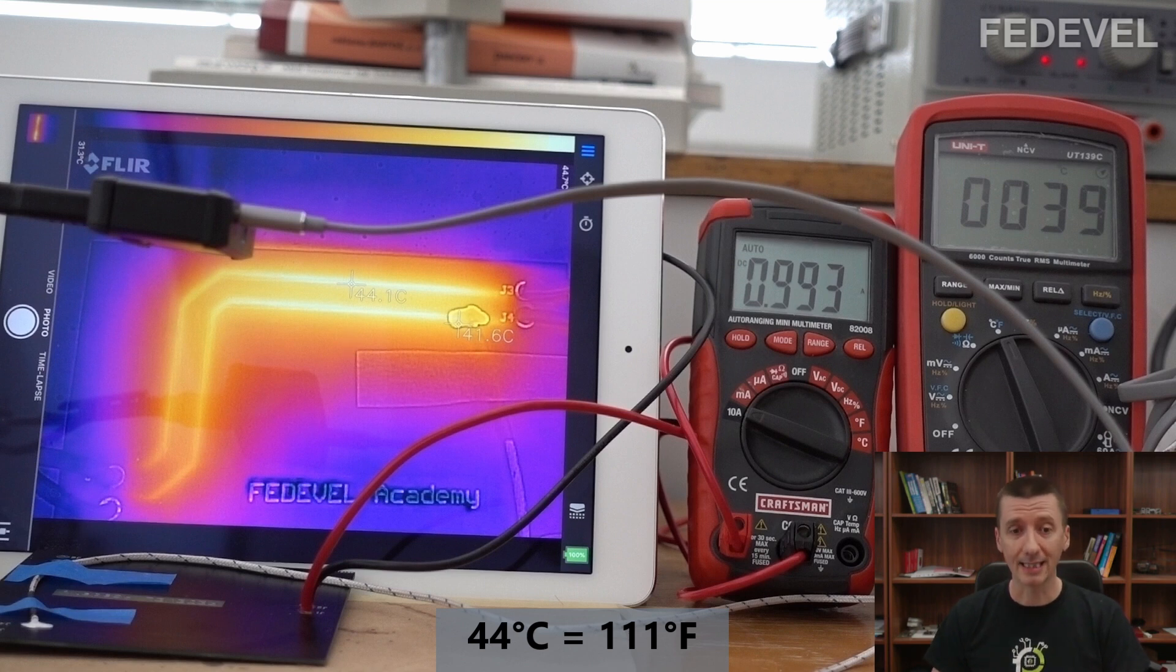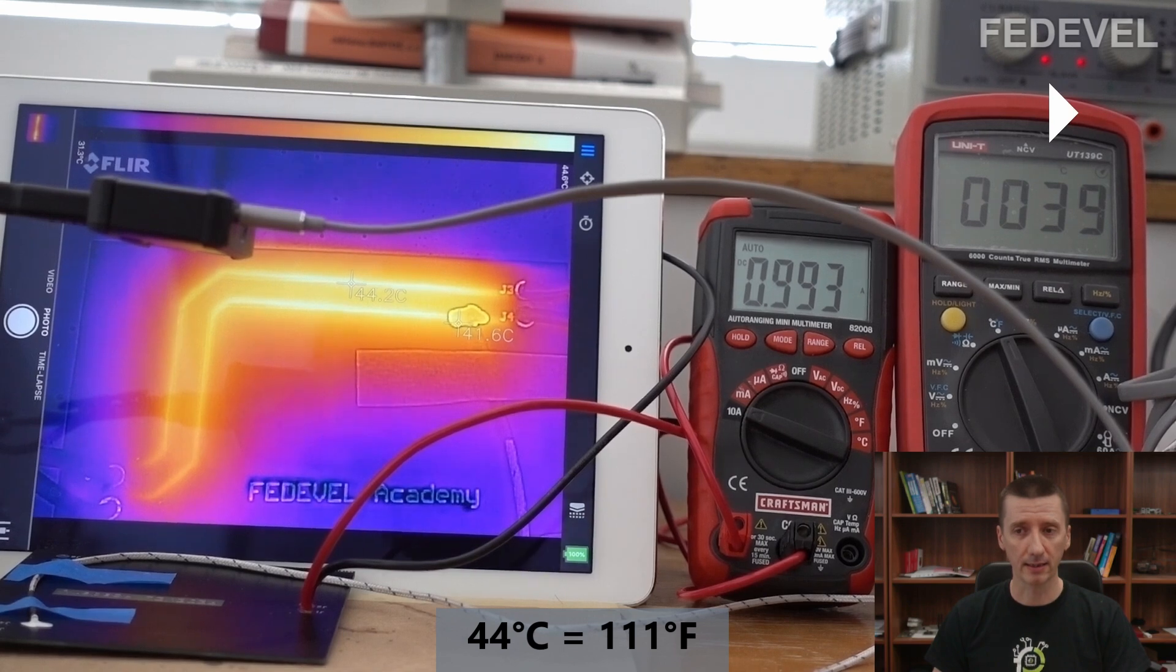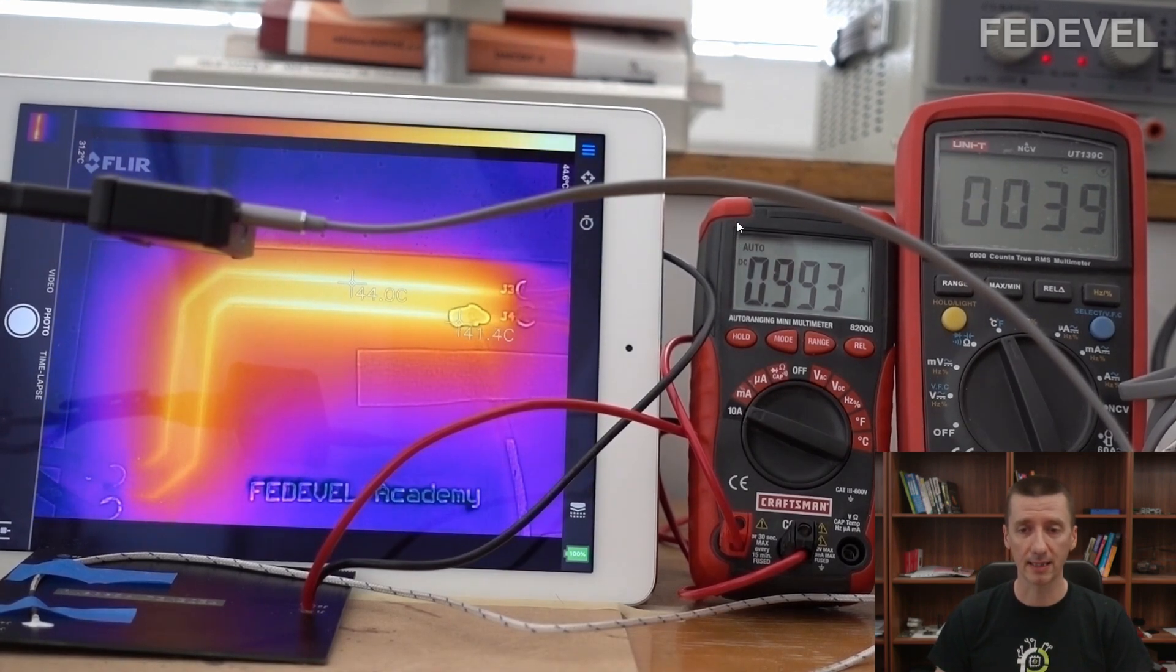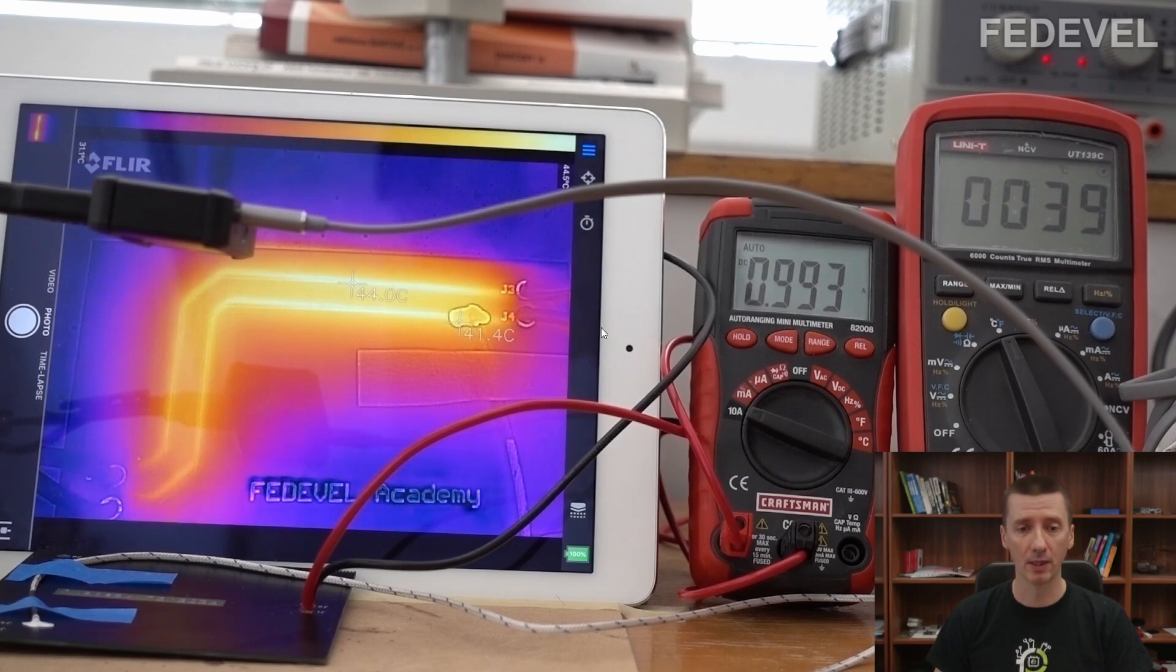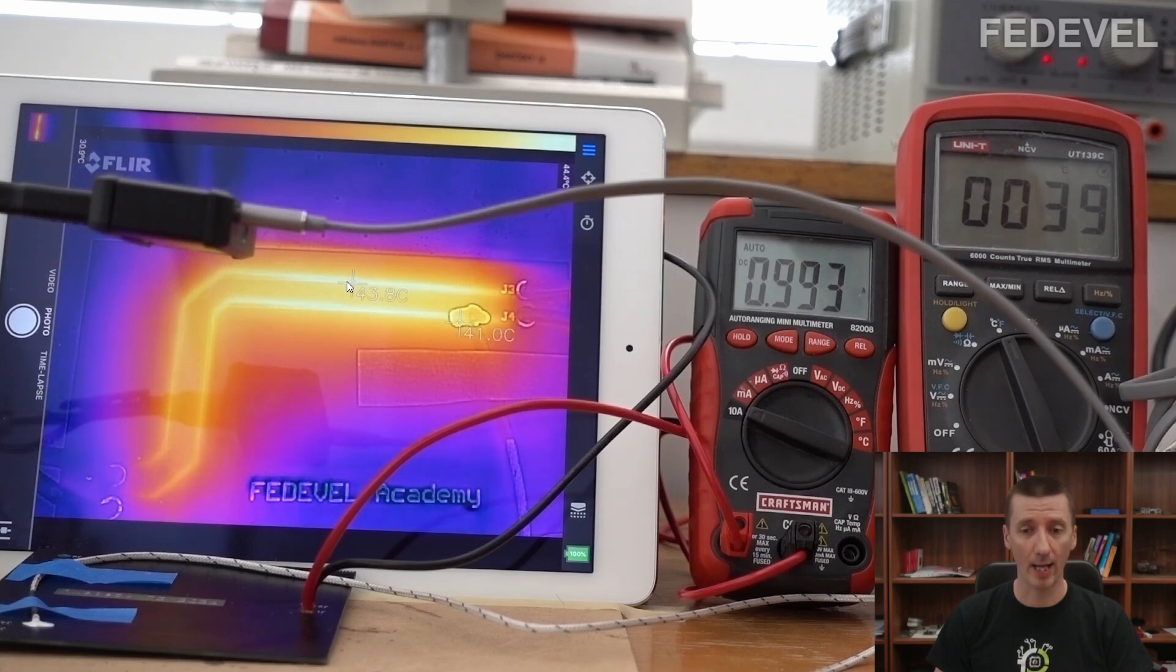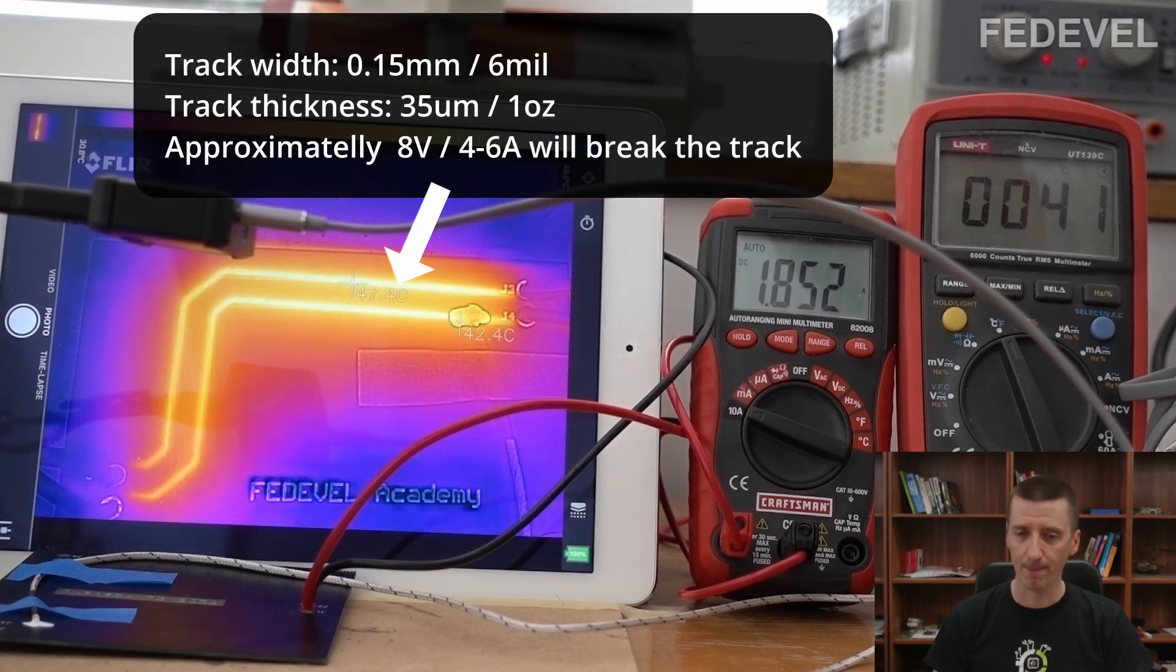I'm going to increase the current. I'm going to play the video and you will see I'm going to increase the current to 2 amps. Watch how this temperature is going to increase. 43 for 1 amp. Now I'm increasing the current. And the temperature is a little bit higher.